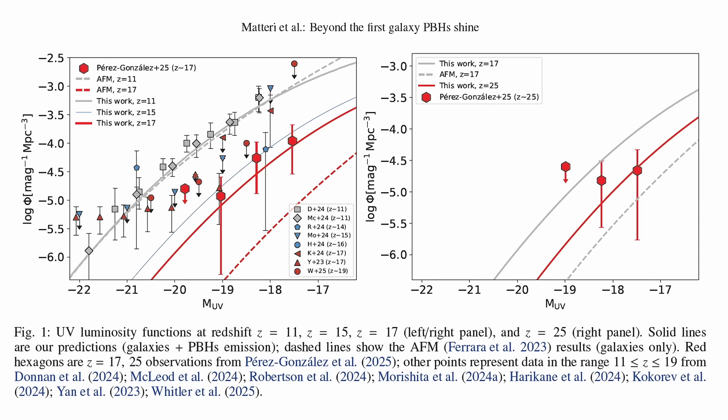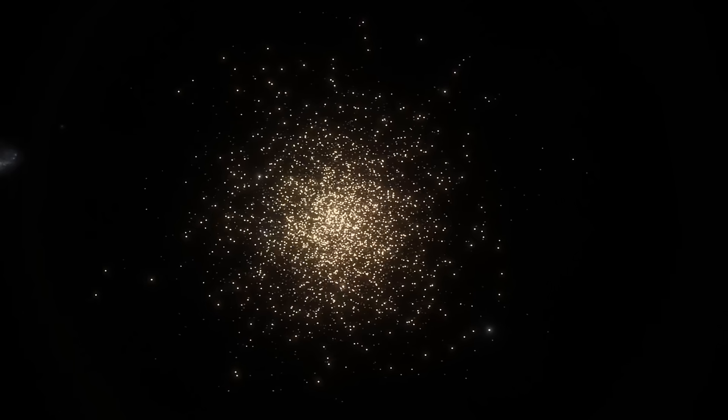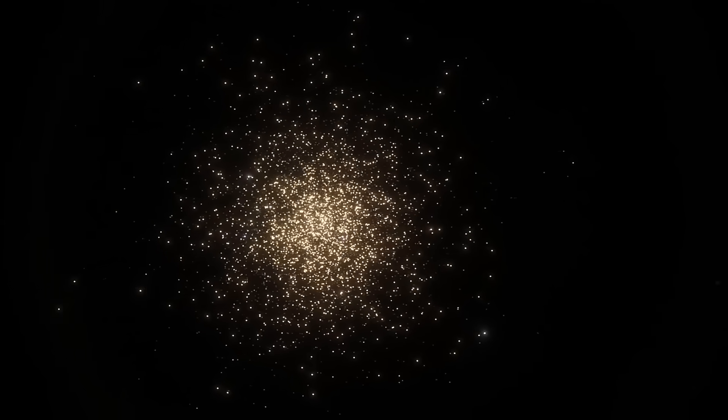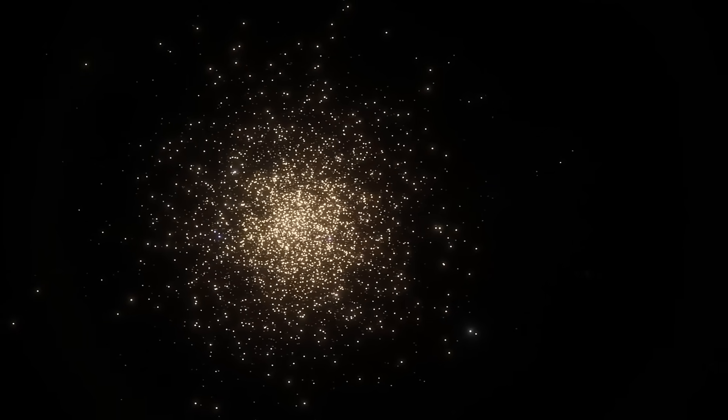Both are astonishingly bright for their time, with UV magnitudes around minus 18 to minus 19, comparable to much later dwarf galaxies, but appearing barely 100 million years after the Big Bang. And both are tiny, with half-light radii below 100 parsecs. That's barely larger than a giant star-forming clump inside the Milky Way.